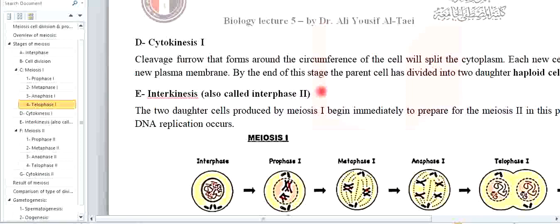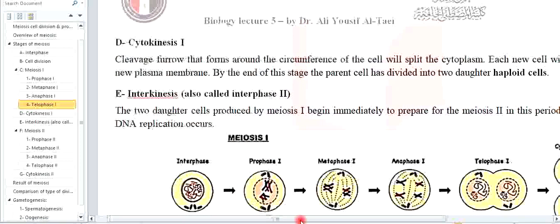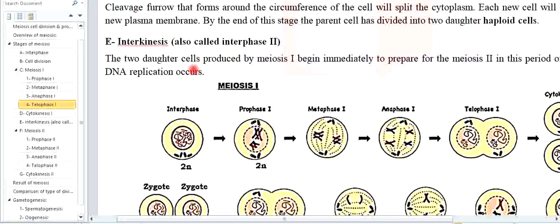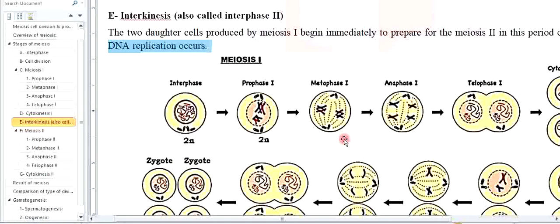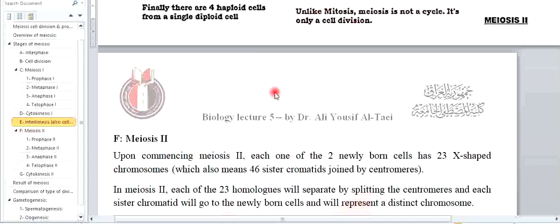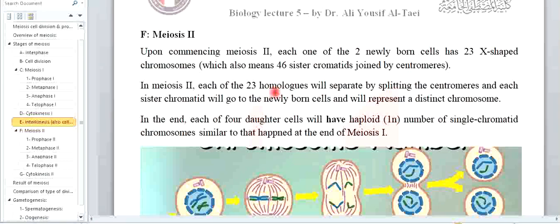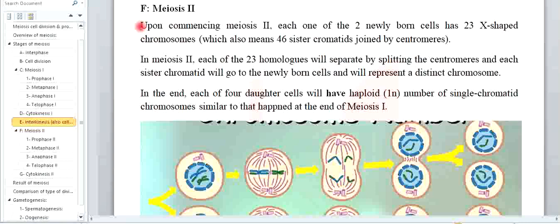Interkinesis — هي الـ preparatory phase، تعادل الـ interphase بالميتوسيس أو حتى الـ interphase بالميوسيس، لكن without DNA replication. Without DNA replication يعادل الـ interphase بالميتوسيس. وهو عملية preparation of the cell to undergo cell division. فهنا سيبدأ لدينا الـ meiosis 2.